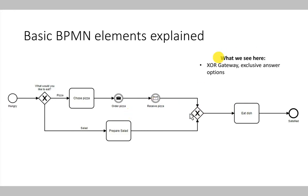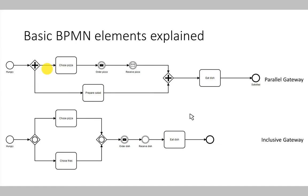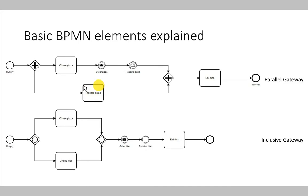Of course there are also different types of gateways — not only the XOR gateway, but also the parallel and the inclusive OR gateway. The parallel gateway is marked with a little plus sign, and it executes the process so that both process paths are executed in parallel. So when the process arrives at the parallel split gateway, it is split into two parallel paths. We in parallel choose a pizza, order it, and receive it, while also preparing a salad. Once both process paths are finished, the process is joined together and we eat our dish consisting of pizza and salad.